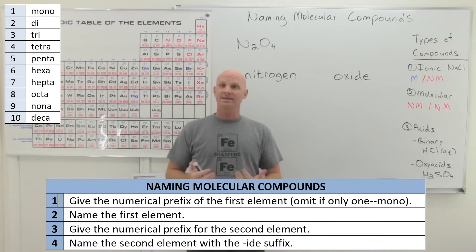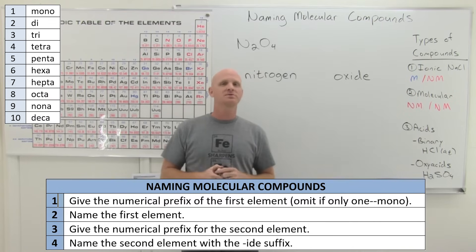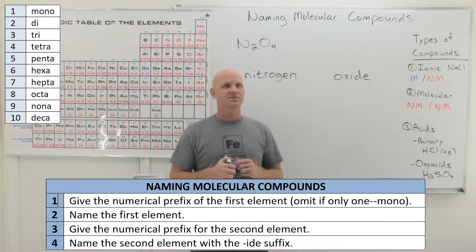And some of those will be familiar like deca for decade, 10 years, and octa like an octagon, and hexa like a hexagon. But hepta and nana, not the most common things in the world, but also not the most common you're going to see in the compounds, it turns out.